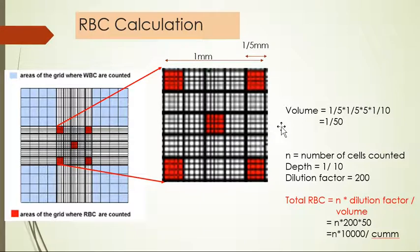Let's see RBC calculation. The middle square is used for RBC calculation. This area is the RBC chamber which has three lines. It has five divisions on one side, so total 25 small squares are present. Within one small square, there are 16 smallest squares.